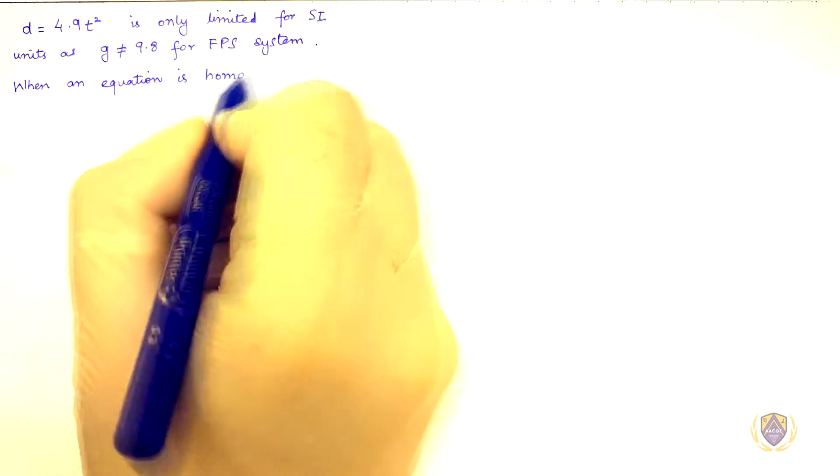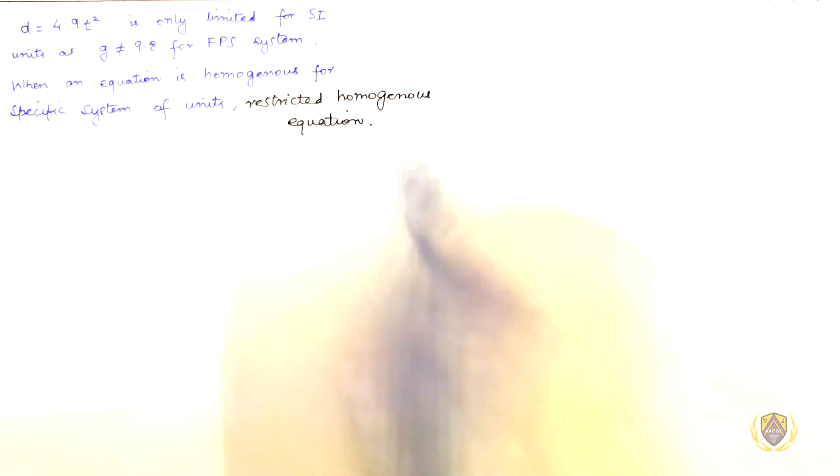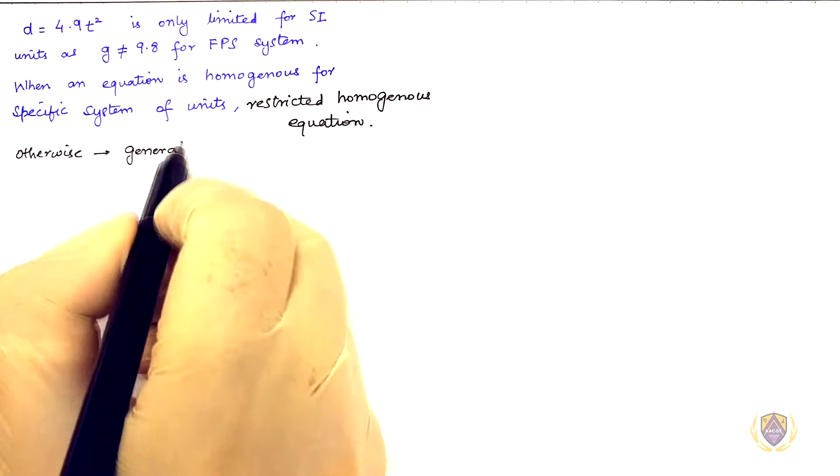When an equation is homogenous for specific system of units, it is called restricted homogenous equation. Otherwise it is a general homogenous equation.